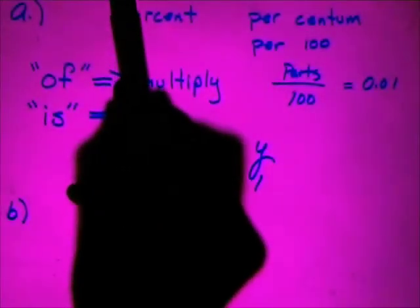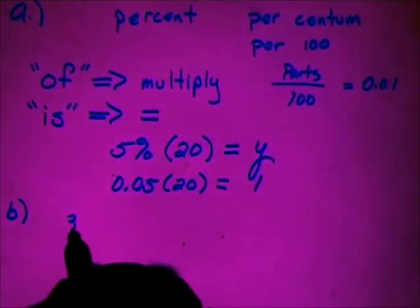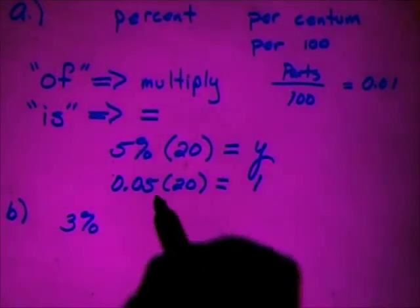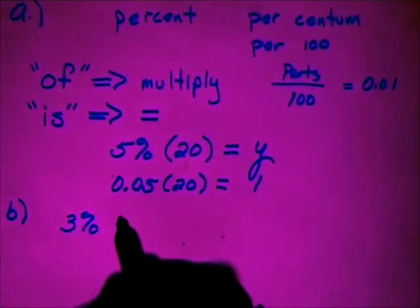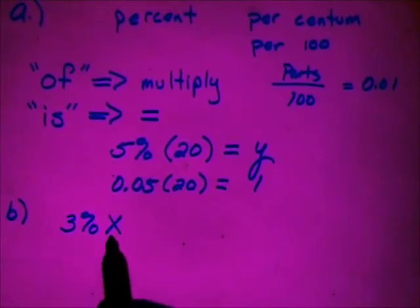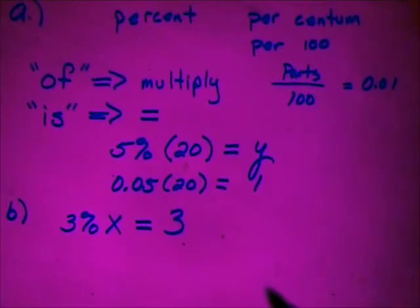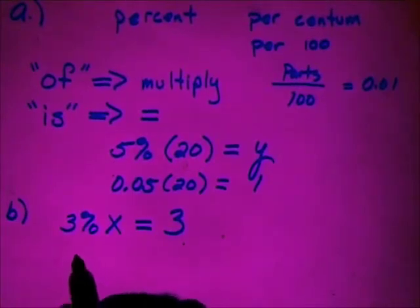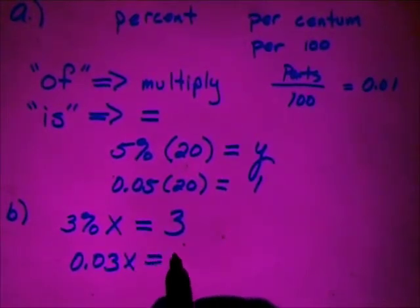3% of what number is 3? So this time we have 3% of means times, but we don't know what the original amount was. So I'm going to call that, I think I'll use an x this time. 3% times x is 3. Once again we must change the percentage to a numerical equivalent. So that would be 0.03 times x is equal to 3.